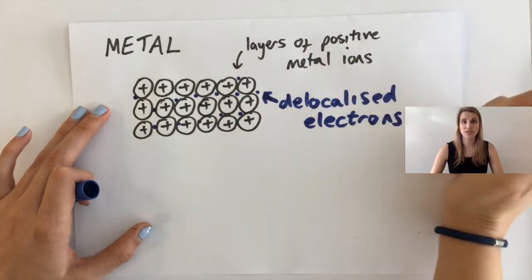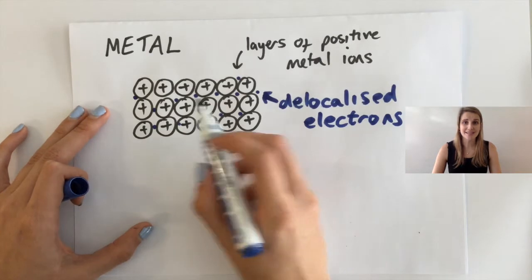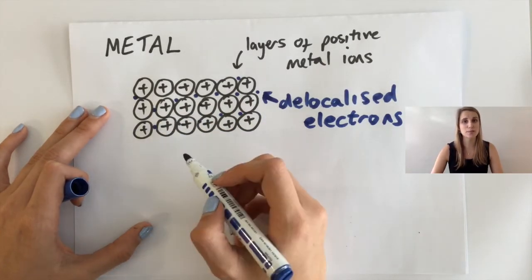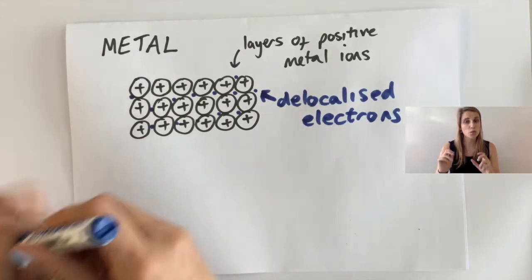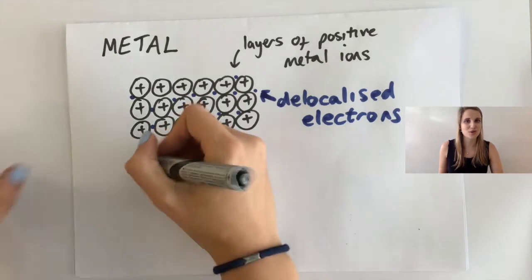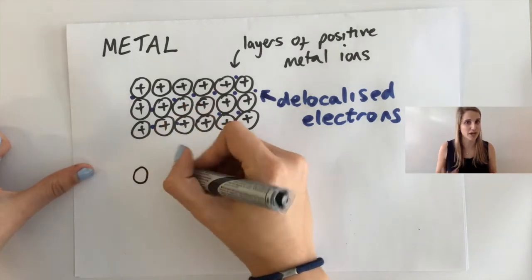Now the problem with this is that these layers can slide over each other really easily, and that makes the metal really malleable, which is great because the metals can move and can be molded into shapes. But sometimes we want to build things like bridges and buildings which we don't want to be malleable in any way, shape, or form.